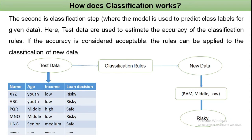In the second step — the classification step — the model is used to predict class labels for given data. Test data are used to estimate the accuracy of the classification rules. If the accuracy is considered acceptable, the rules can be applied to the classification of new data.